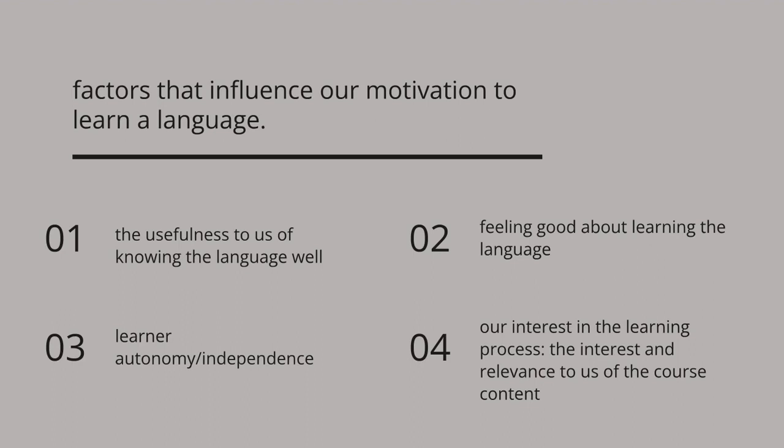Further factors include learner autonomy and independence — feeling responsible for and in control of our own learning — encouragement and support from others, for example teacher, parents, classmates, school, and society. Also our interest in the learning process, the interest and relevance to us of the course content, classroom activities, the teacher's personality, and teaching methods. Learners may have strong motivation in one of these areas and little in another, or their motivation may be quite balanced.